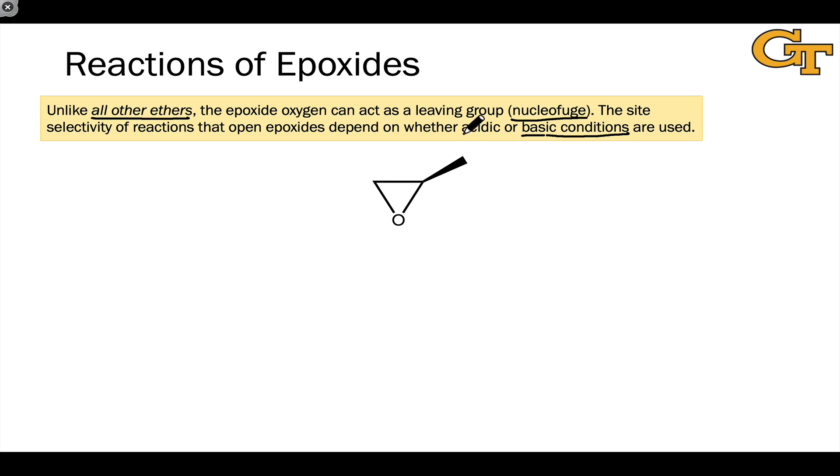That said, we can also do this substitution process under acidic conditions and the site selectivity where the nucleophile bonds actually depends on whether acidic or basic conditions are used. So we're going to explain this and look at some examples on this slide. Where we're really focusing our attention is on substitution reactions of one of the carbon oxygen bonds within the epoxide. These are the most important reactions of epoxides by far.